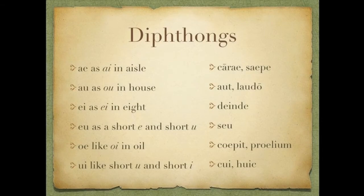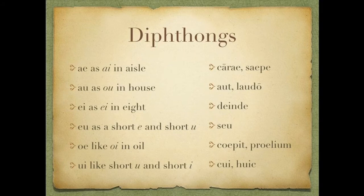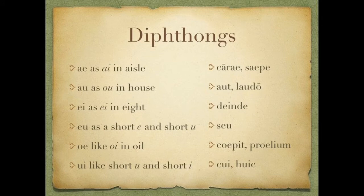Latin also has diphthongs, just like we do in English. Diphthongs are combinations of vowels. The diphthongs in Latin are: AE, which we pronounce like the I in isle — carai and sipe. AU is like the O in house — aut and laudo. OE is like the A in ate — dane day. EU is like a short E and a short U pronounced in rapid succession — ceu — it is still one sound but kind of lengthened a little bit.